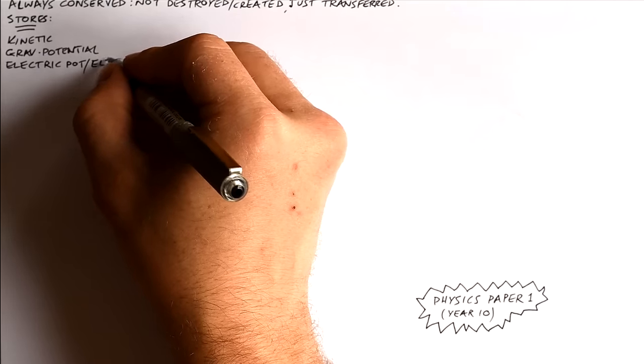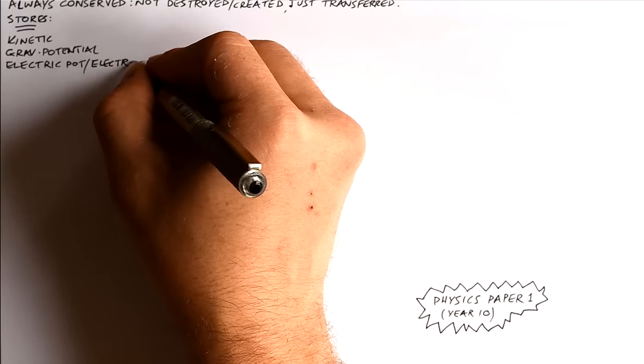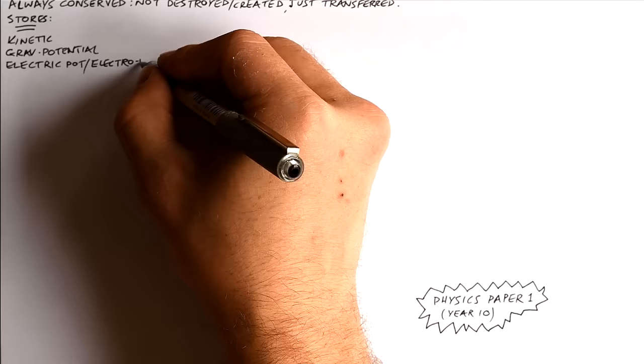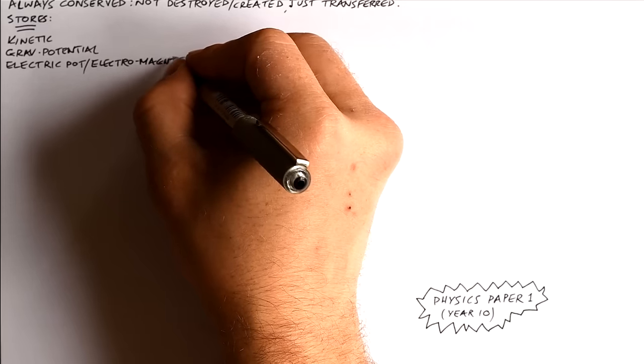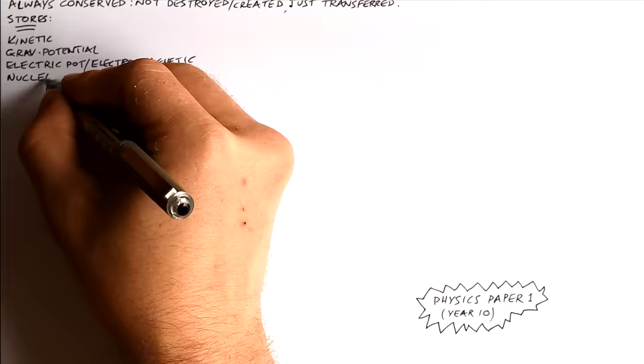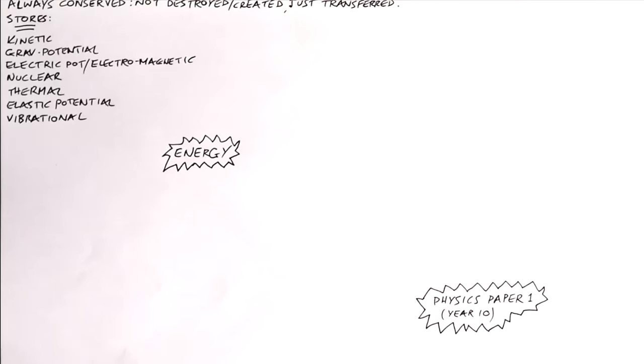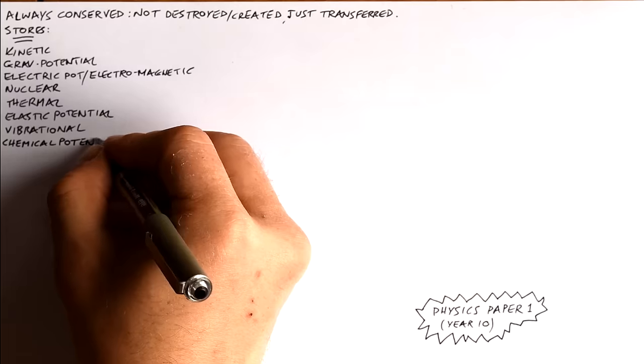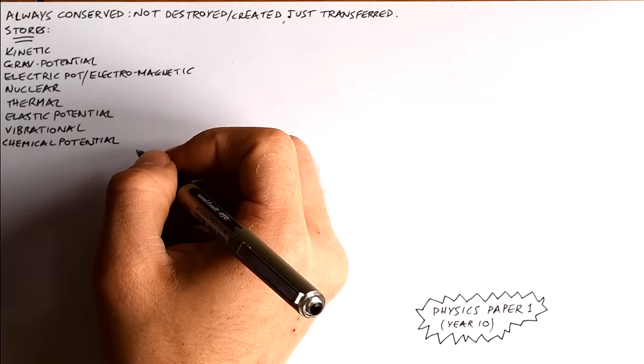And we have different stores of energy: kinetic, gravitational or gravitational potential, electric potential. That's similar to electromagnetic but usually electromagnetic is reserved for EM waves which is a way of transferring energy. We've got nuclear, thermal, elastic potential, vibrational and chemical potential and sound comes under vibrational.